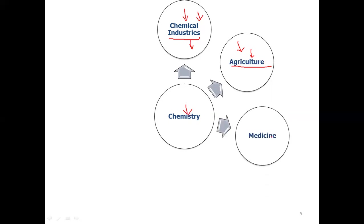Knowledge of chemistry has resulted in medicines. Almost every household has aspirin and paracetamol, which are very common chemical compounds synthesized with the knowledge of chemistry. Similarly, cisplatin is used in chemotherapy to treat cancer, and Taxol is also used in the treatment of cancer. With the help of chemistry we have been able to synthesize artificial drugs as well as extract drugs from natural resources like herbal plants.